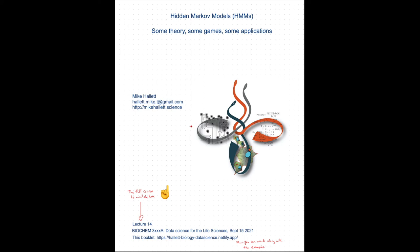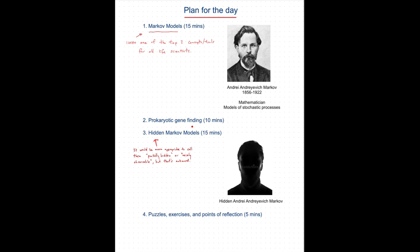Today we are going to look at hidden Markov models. We'll start by talking about plain old Markov models from Andrei Markov. They've been around for a while, and Andrei Markov is known for developing the branch of mathematics that is really important for modeling stochastic processes — and that's certainly the case in the life sciences. Biological systems are noisy, or stochastic, or variable. Markov models are one of the top tools that all life scientists should have, and once you understand how they work, they're a very powerful tool for addressing many problems.